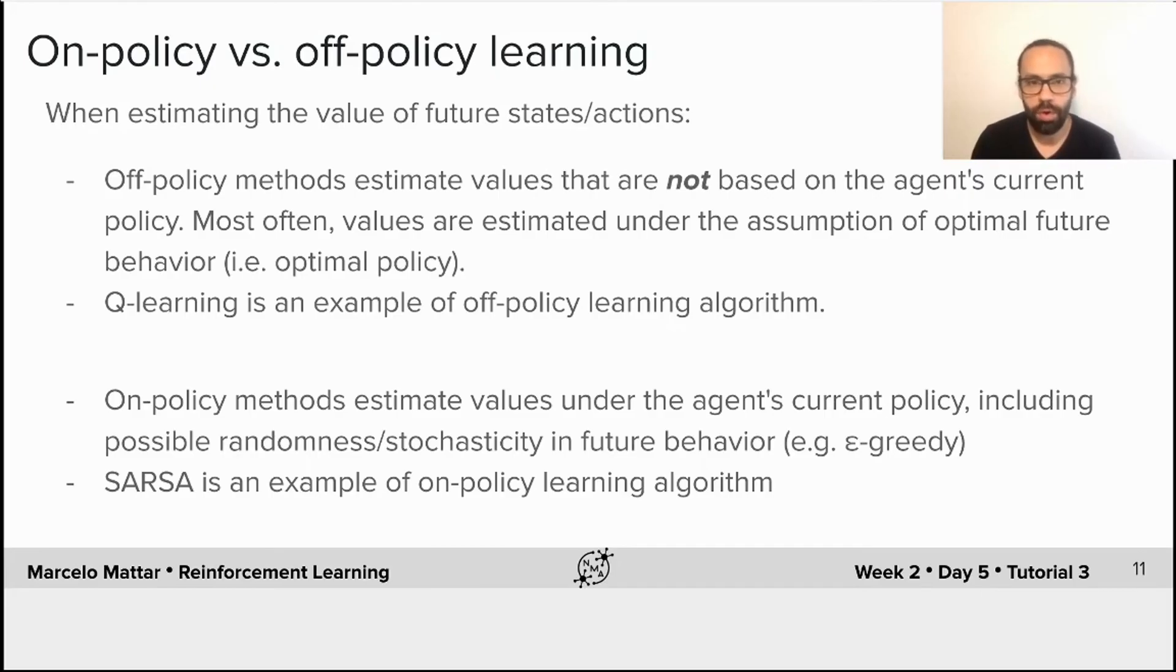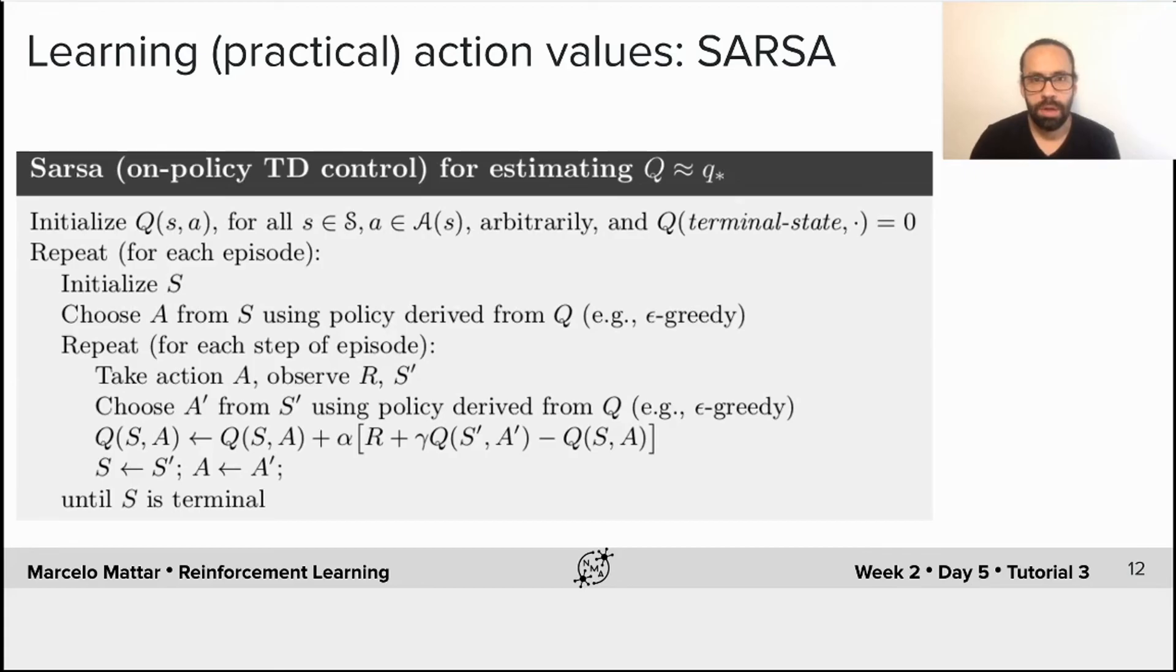In contrast, in on-policy methods, these estimates of the value of future states are instead based on the agent's own current policy. So this means that the value of the next state is determined by assuming that the agent will execute an action in the next state that comes from the same policy that the agent is currently following.